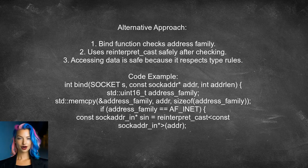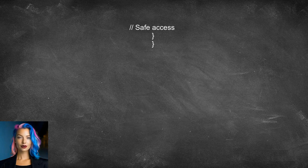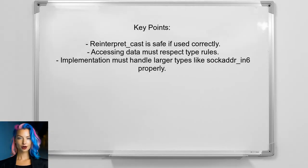An alternative approach suggests that using reinterpret_cast with sockaddr is safe in the context of the bind function. The bind function can be implemented to check the address family before accessing the data, ensuring safety. The reinterpret_cast itself is not undefined behavior as long as the data is accessed correctly. The implementation must also handle cases where sockaddr_in6 is used, as its size is larger than sockaddr.